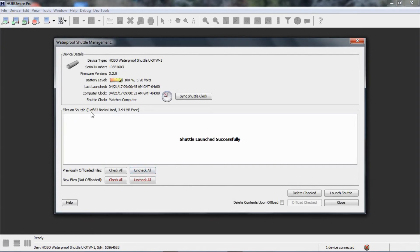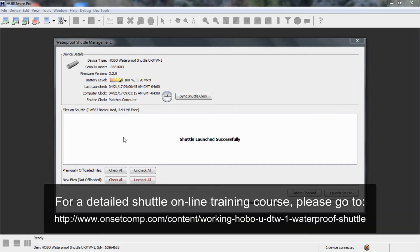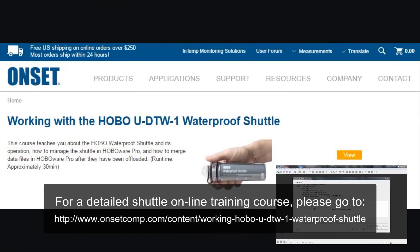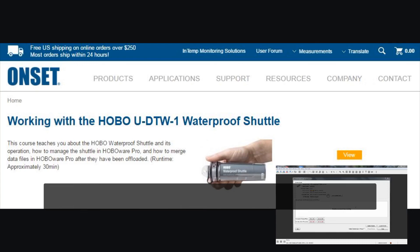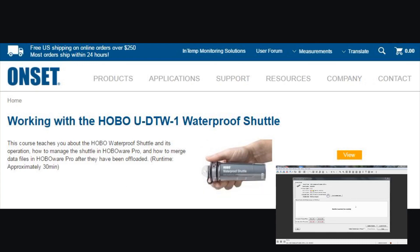But now we've relaunched our shuttle. We see that the files on the shuttle, we have 0 of 63 banks. We have 4 megabytes free, which means we're all set. The shuttle header has been rewritten. We also see under the shuttle clock, it says it matches the computer clock. So the shuttle clock is operated by those batteries that we replaced. So now that we see that it matches the computer and that we've relaunched that shuttle, we can be confident in using the shuttle in the field to offload our loggers and relaunch them with the correct time and date stamps.